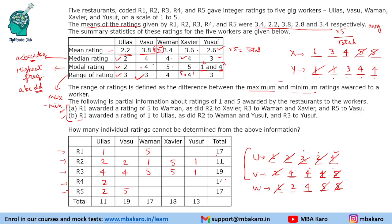Now for Vasu the remaining values are 4 and 4, so we put 4 and 4 and get those values. Now looking at R1 giving ratings to Xavier and Yusuf — total of 7 is left. A total of 7 can be formed using 3 and 4, or 4 and 3, so 3 or 4 comes in these two places.